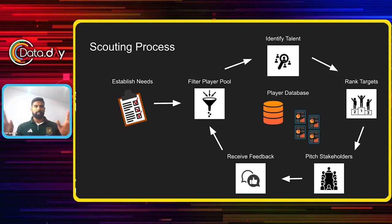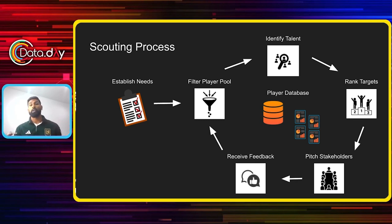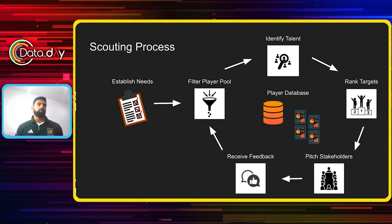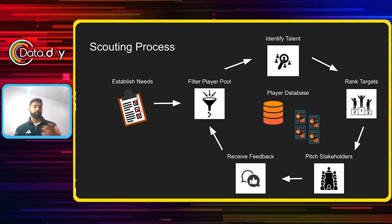Once we have lists from all these different sources, we rank targets by checking each other's work. If our data analysts have a list of five or ten center backs we think may be a good fit, we pass that to our video scouts or ground scouts — they review it, provide feedback, and put that information into a report. The same happens with players they propose: we provide a quantitative and qualitative data report, making sure there are two to three sets of eyes on everyone. We come together and rank all these players, deciding who's our number one, two, and three targets from the fifty or so proposed.